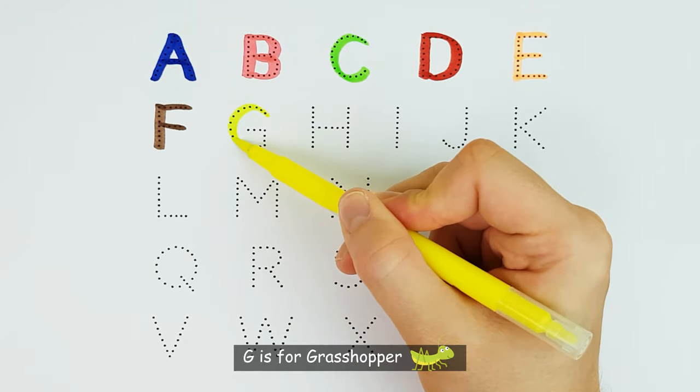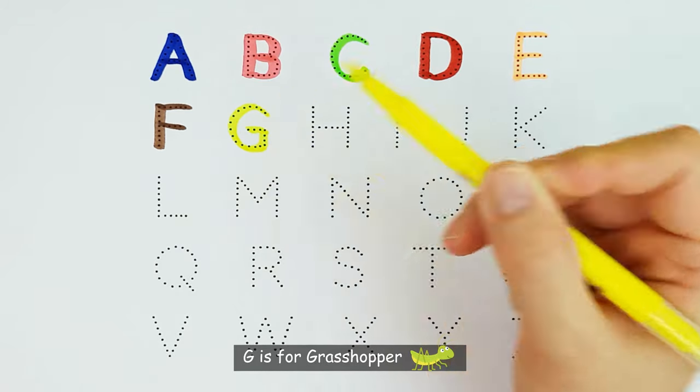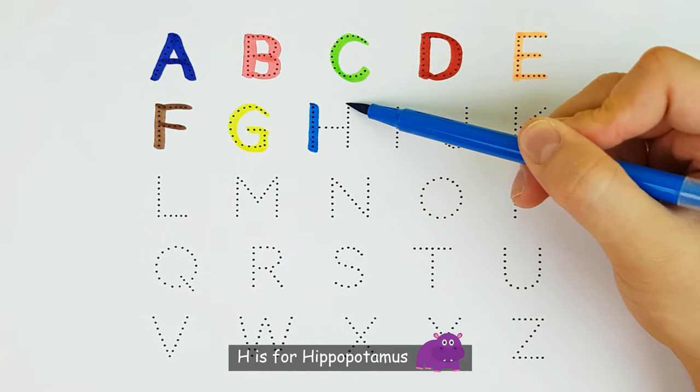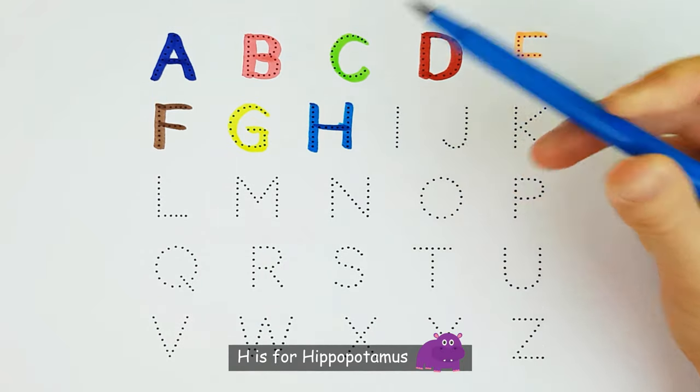G. G is for Grasshopper. G. H. H is for Hippopotamus. H.